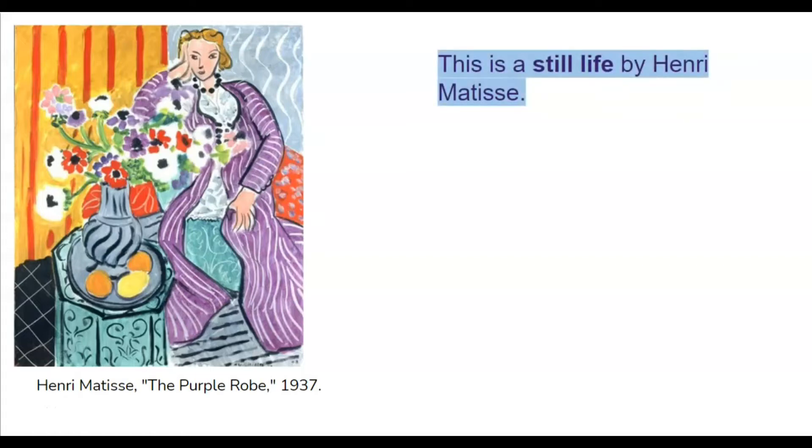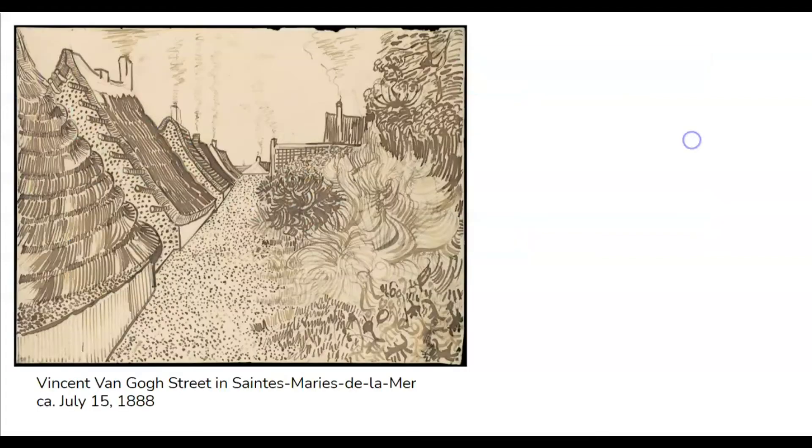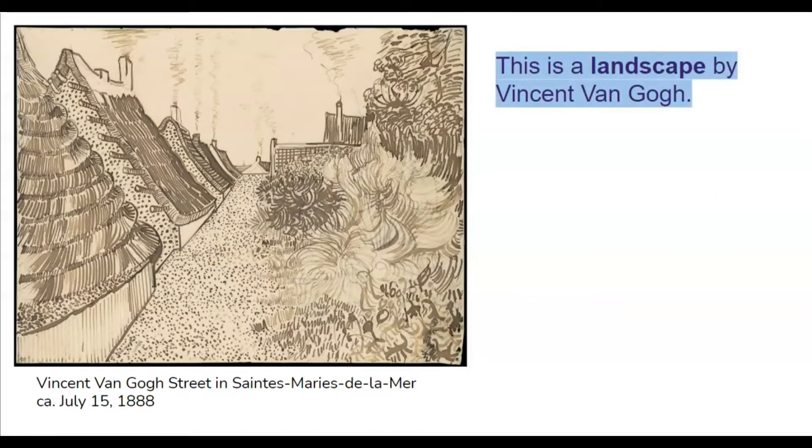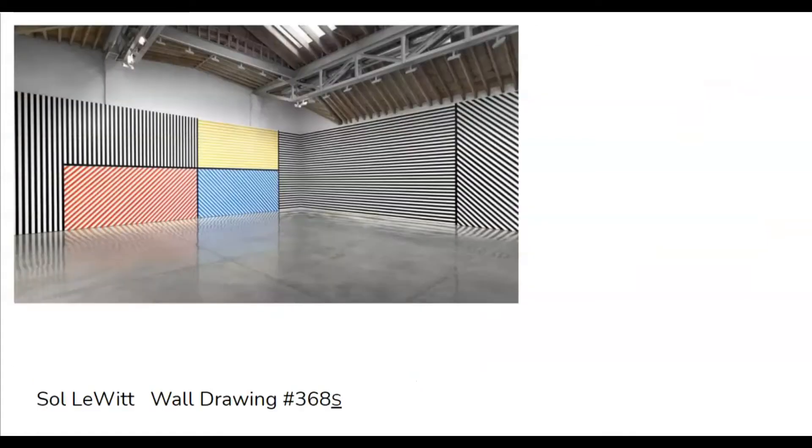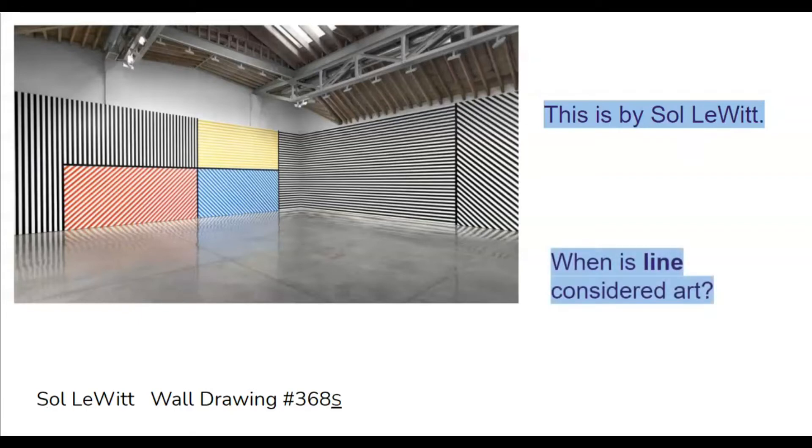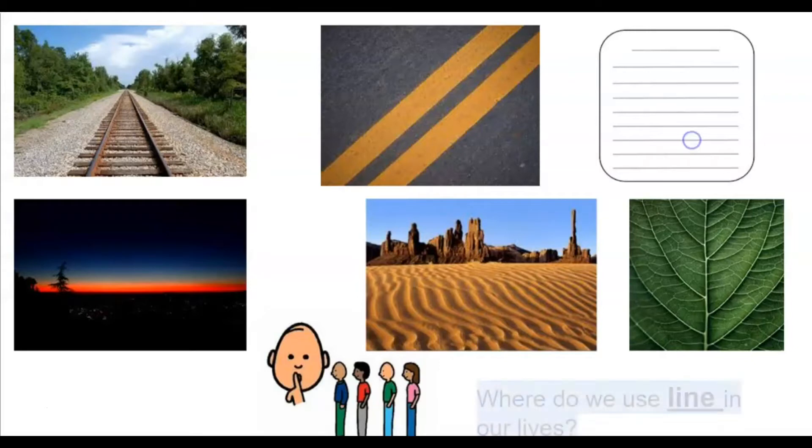This is a still life by Henry Matisse. How does he use line in his art? This is a landscape by Vincent van Gogh. How does he use line to make his artwork more interesting? And this is by Sol LeWitt. When is line considered art? Is this even art? Where do we use line in our lives?